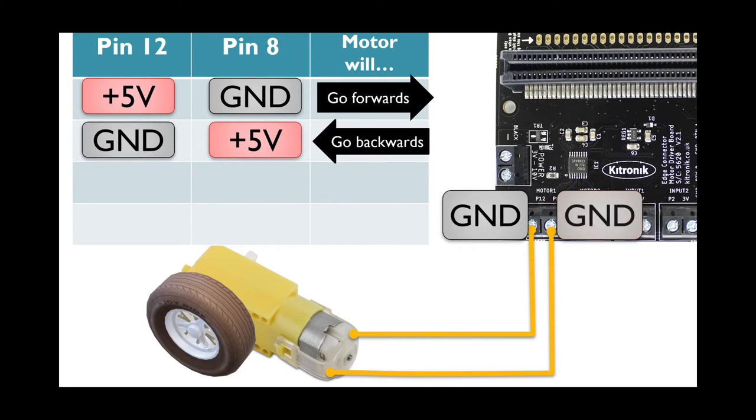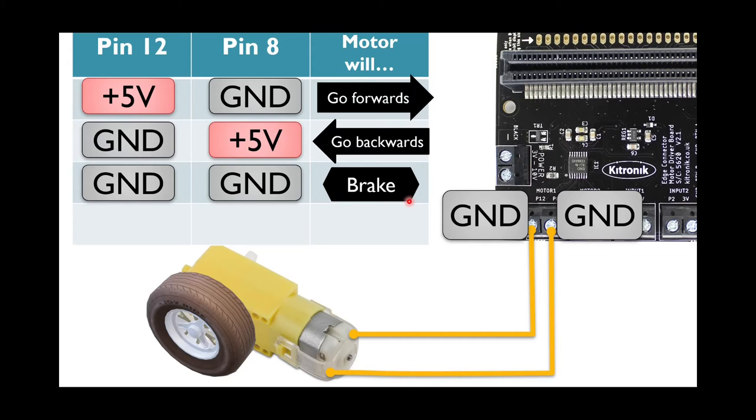What about if both of these were at ground? We just set them both to zero. Well, now there is no current. They're both at the same level. So the motor will just brake. It will do nothing.